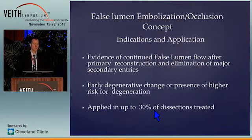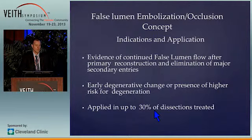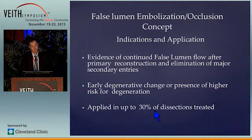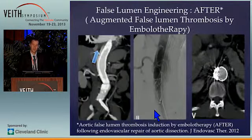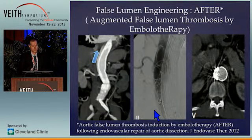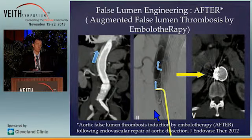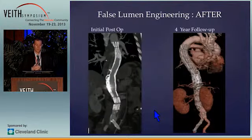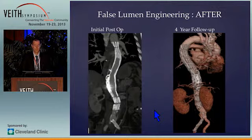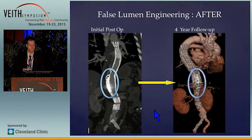Moving on to false lumen embolisation and occlusion, we use this technique largely when a patient has persistent false lumen flow and the presence of underlying degenerative change or high risk for degenerative change. This can be applied in about 20% to 30% of cases. We see re-entry fenestrations supplying flow to the false lumen distally, and using those residual re-entry fenestrations, we can approach them from the true lumen with a catheter and fill the false lumen with a coil nest, which stimulates further thrombosis and occlusion of re-entry flow, and further propagates thrombus to allow false lumen thrombosis and remodelling with compaction of the coils within the aortic wall.